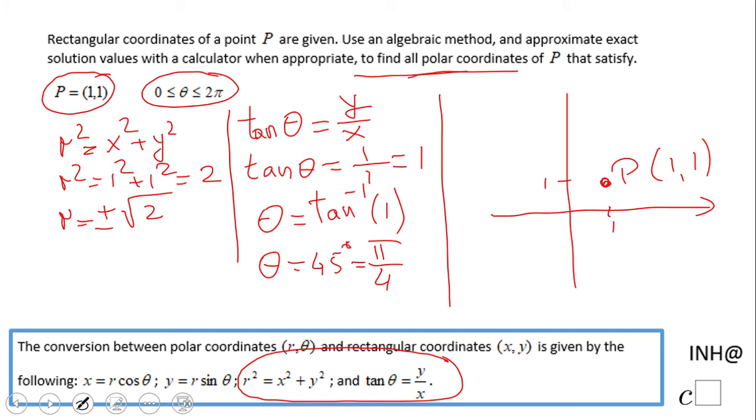So now we have everything we need for this. The distance from here to here is going to be square root of 2. All right. And this angle is pi over 4.